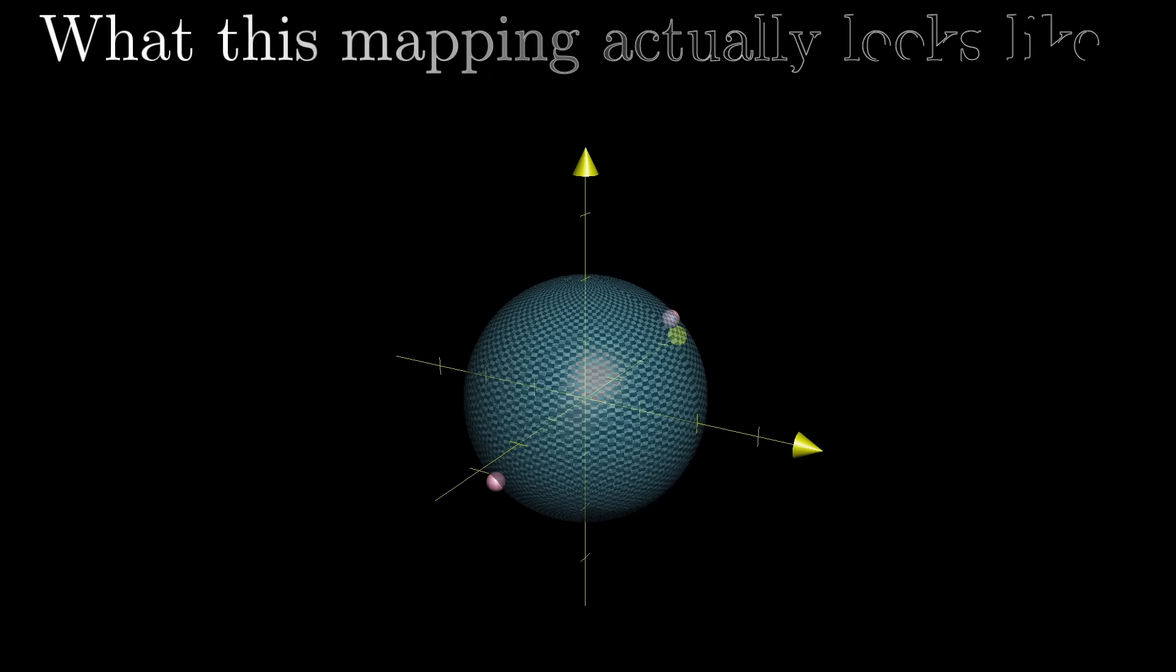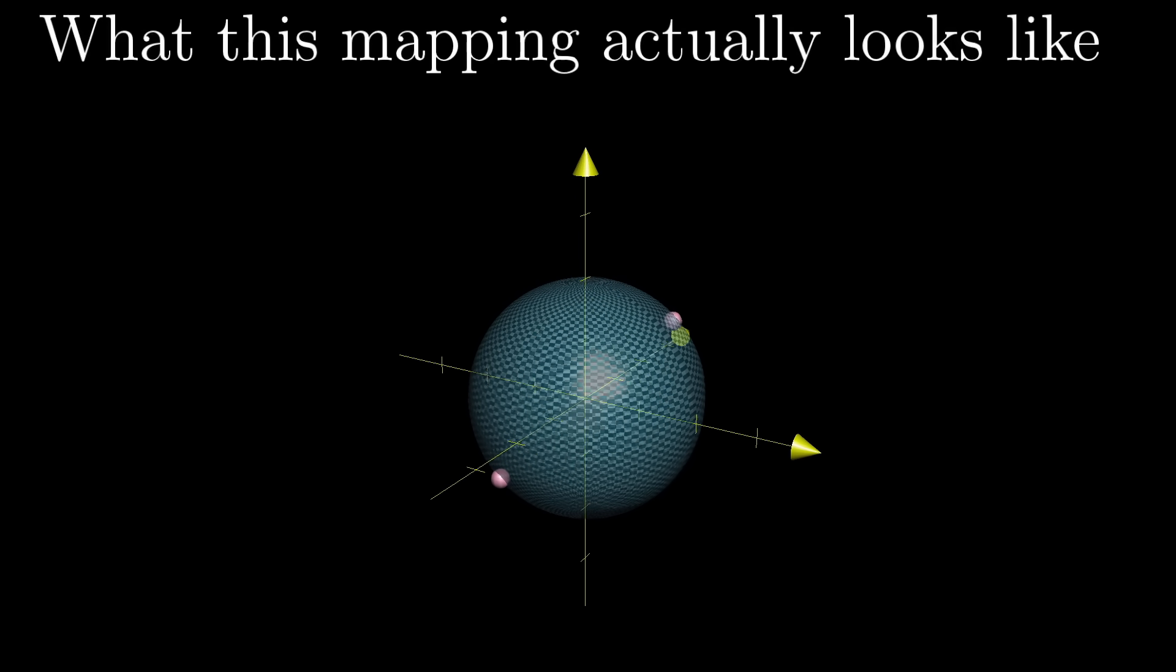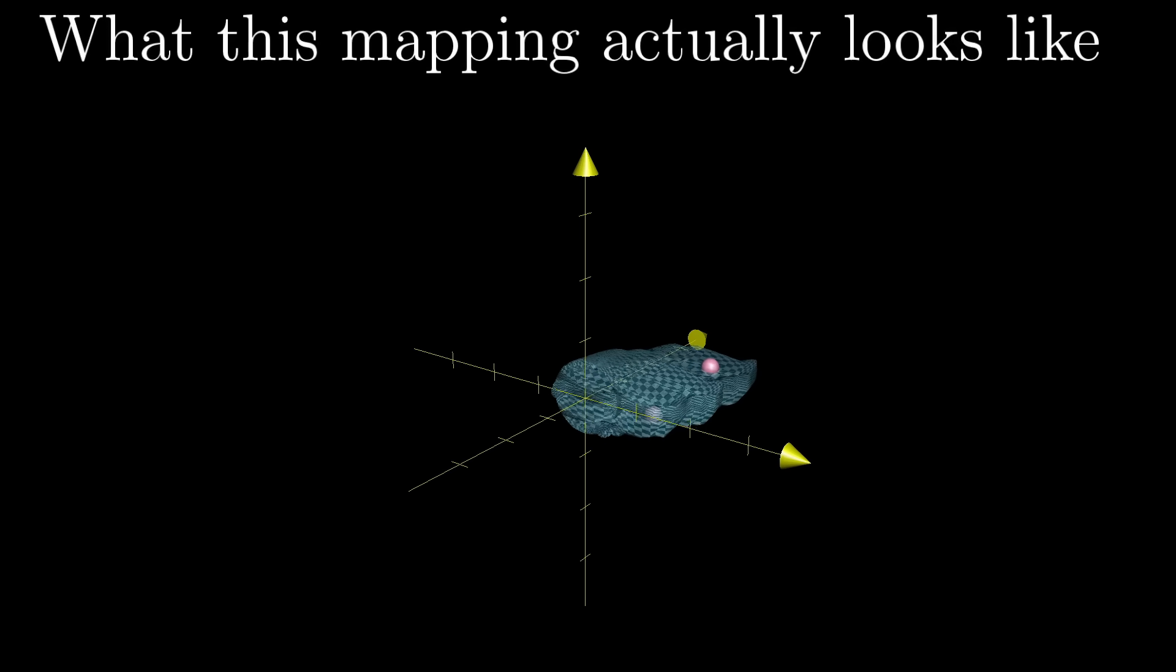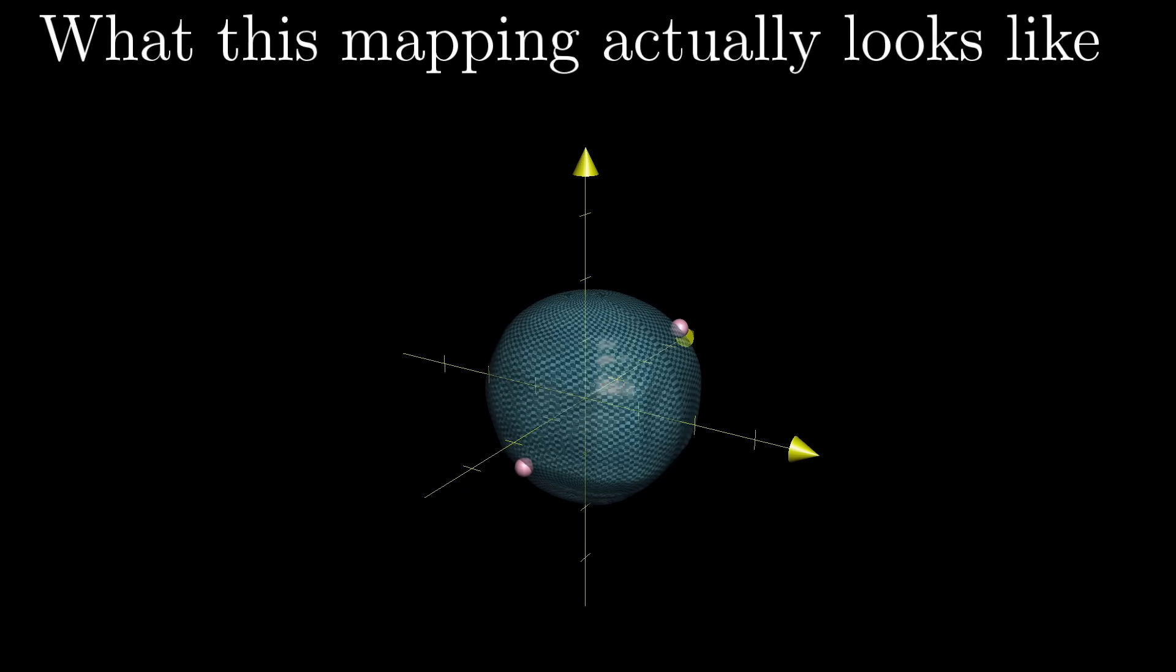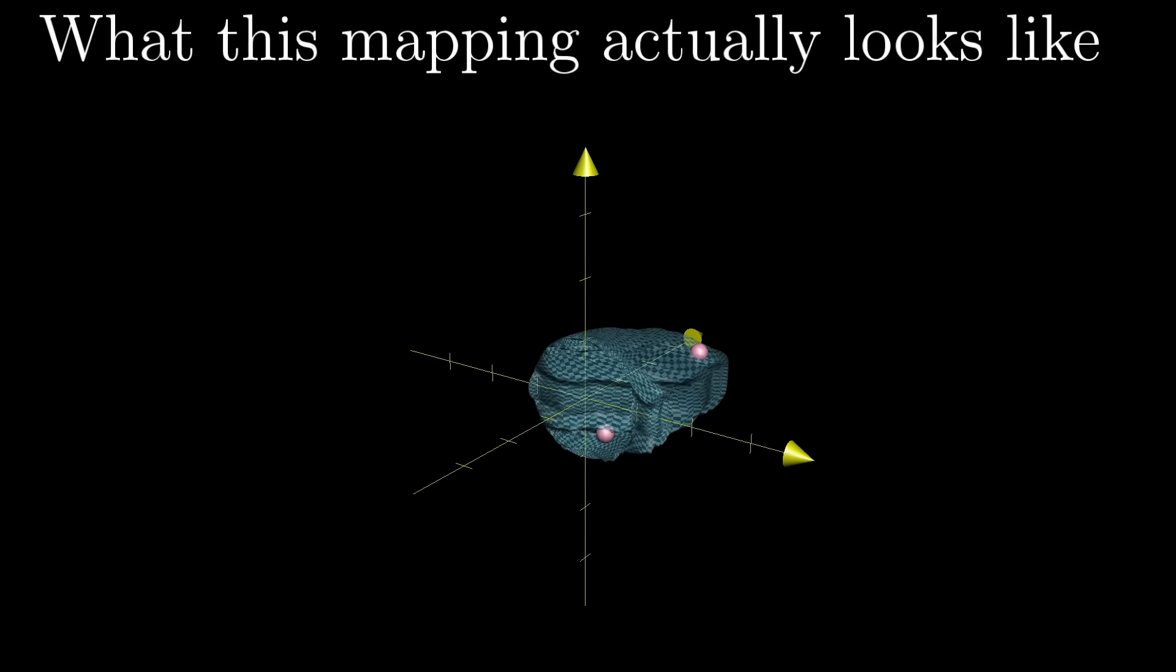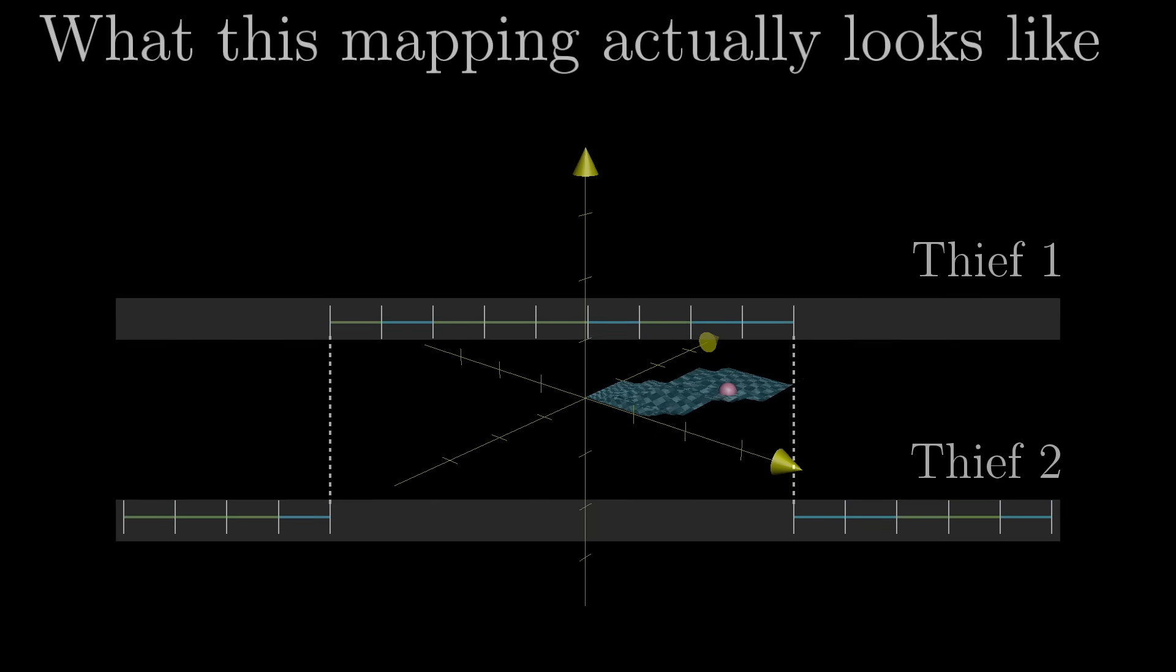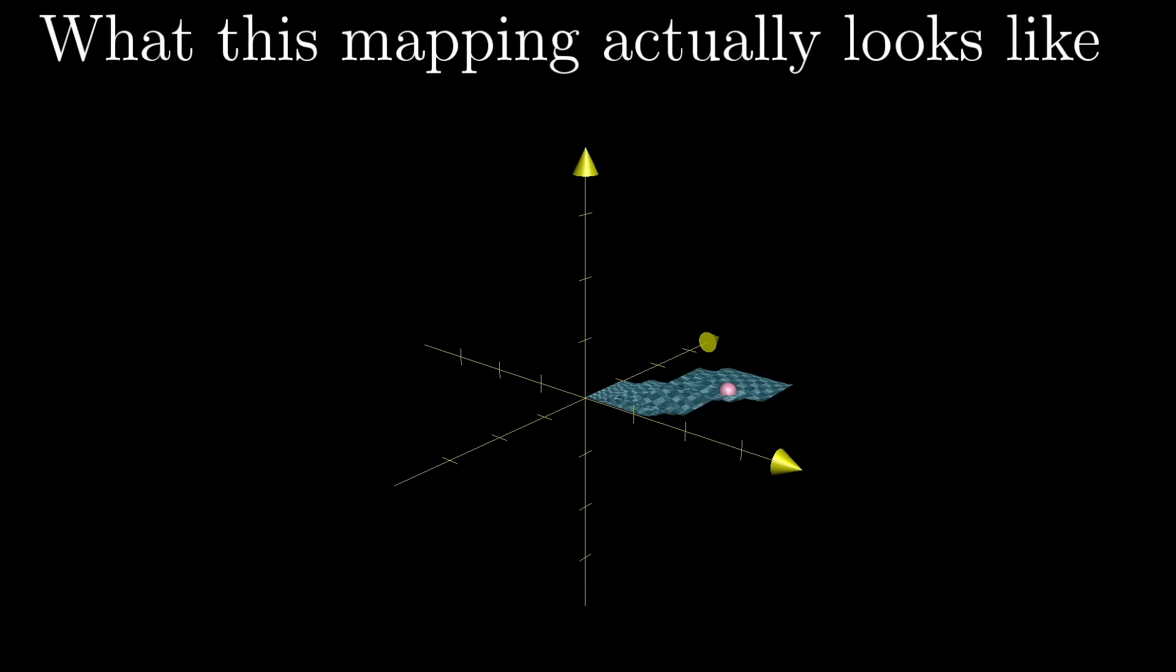And the animation you're looking at right now is that literal map for the necklace I was showing. So the Borsuk Ulam Theorem guarantees that some antipodal pair of points on the sphere land on each other in the plane, which means there must be some necklace division using two cuts that gives a fair division between the thieves.